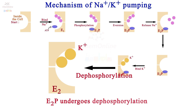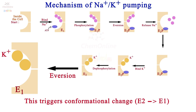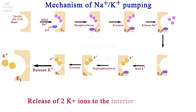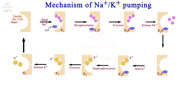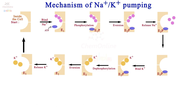E2P binds two K+ ions from outside the cell. Binding of the two K+ ions causes dephosphorylation of the enzyme, which again causes a conformational change from E2 back to E1. This results in the release of two K+ ions to the interior of the cell. The cycle is then complete and E1 is again available for phosphorylation — it will once more bind an ATP molecule and three Na+ ions from inside the cell, and the process repeats. The ATPase-ATP combination thus acts as the sodium potassium pump.